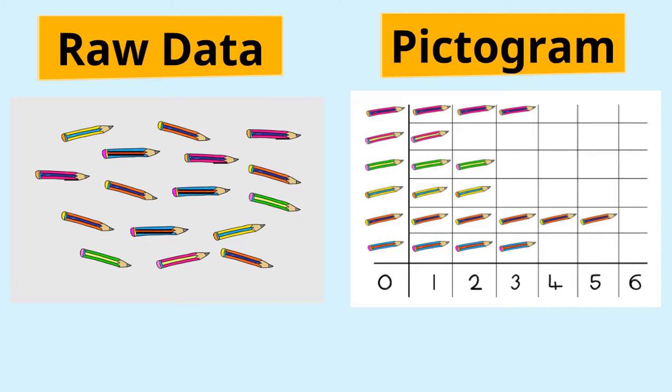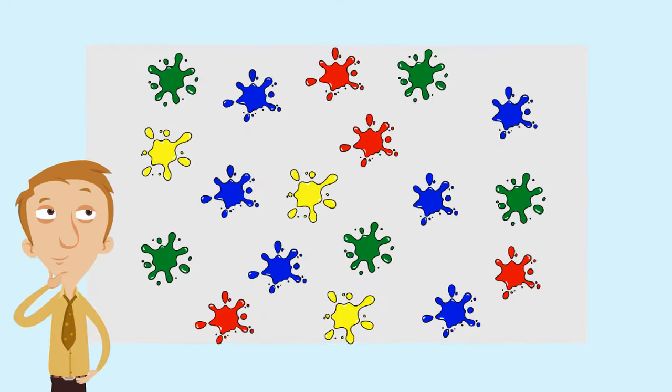So on the left hand side we have the raw data which is them all just mixed up on a picture like this and on the right hand side when we sort them into their correct colors we can make a pictogram. Raw data is messy like these paint splats here. It'll be very hard to answer lots of word problem questions about these paint splatters when they're all mixed up. Instead let's organize them into a pictogram.